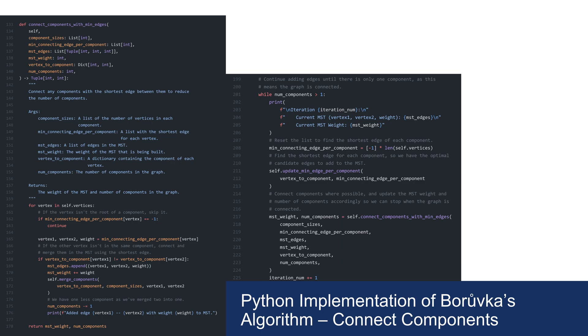Continuing with the iteration in the main function on the right, the next step on line 217 is to connect components with the minimum edges that we found. This method can be seen on the left. It iterates through vertices to check for the root of a component. Then on line 165, it gets the minimum edge for that component and checks whether it still connects two different components. If so, it adds the edge to the MST, adds the edge's weight, and merges the smaller component into the larger component. At the end, it decrements the number of components.